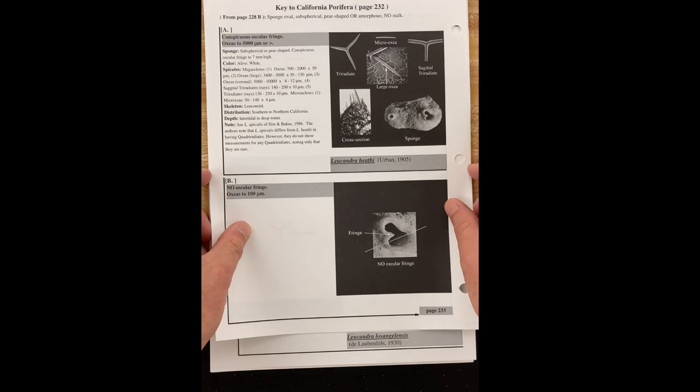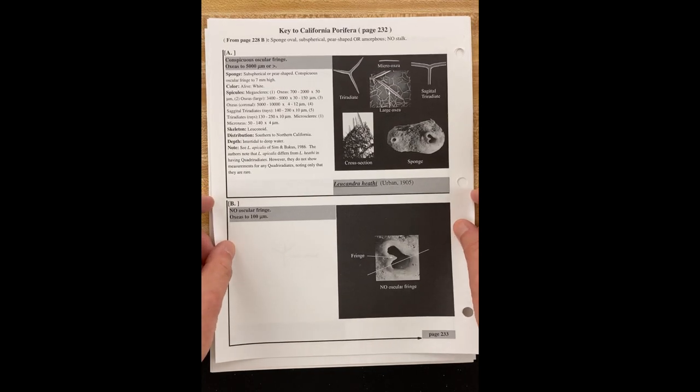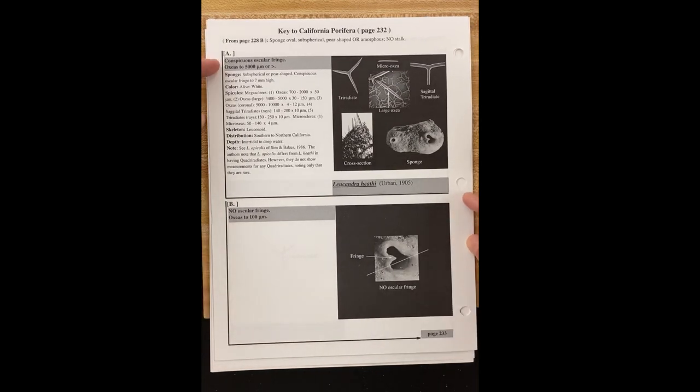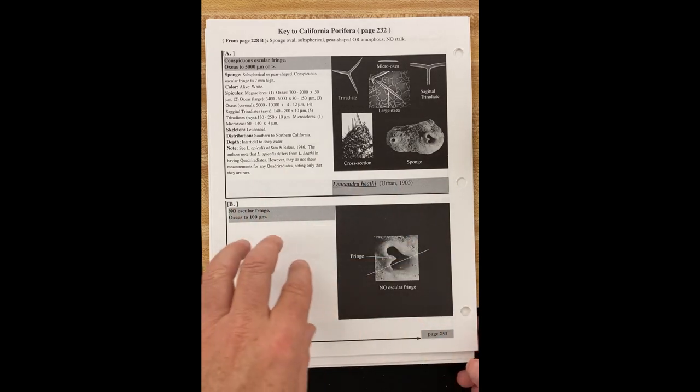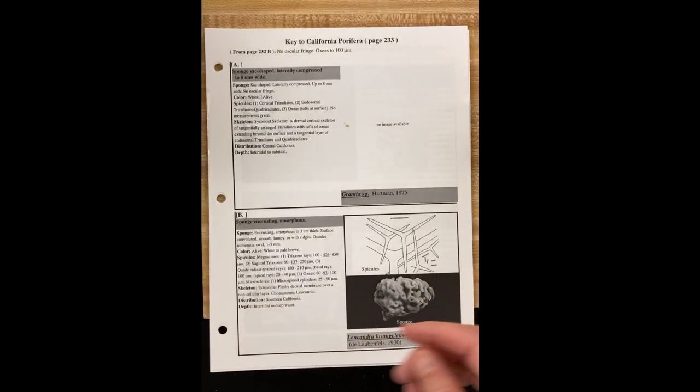Here we need to know if the sponge has a conspicuous oscular fringe of spicules. So spicules sticking out from around the border of the osculum. Take my word for it, ours did not have those. Also it would need these very long oxias which are rod-shaped spicules. Ours did not have those. Alternative is no fringe and oxias to 100 microns. I actually didn't see any oxias at all among the spicules but I'm still going to go with B as the best fit. So we go to page 233.